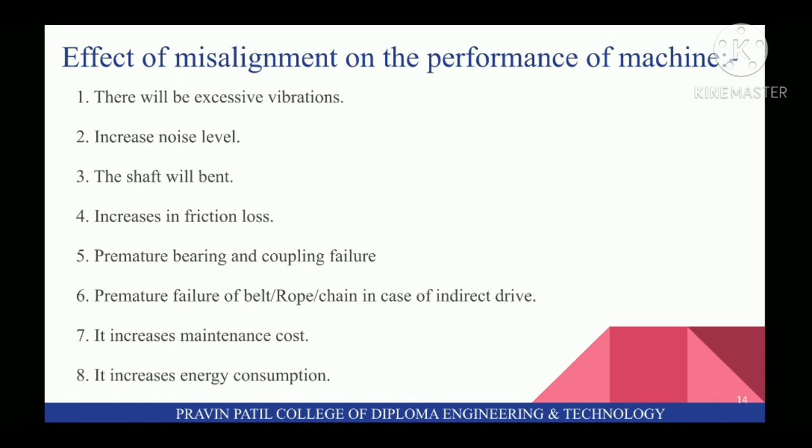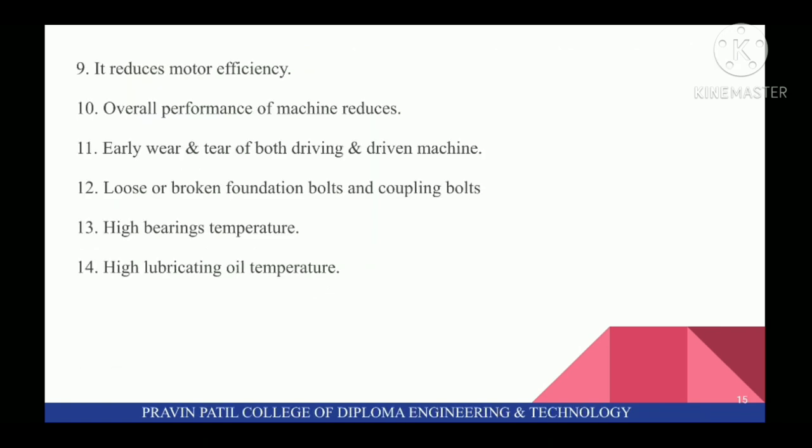Next topic is effect of misalignment on the performance of machine. First, there will be excessive vibrations. Second, increased noise level. Third, the shaft will bend. Fourth effect is increasing friction loss. Fifth is premature bearing and coupling failure. Sixth is premature failure of belt, rope, chain in case of indirect drive. Seventh, it increases maintenance cost. Eighth, it increases energy consumption. Next effect, it reduces motor efficiency. Tenth, overall performance of machine reduces.